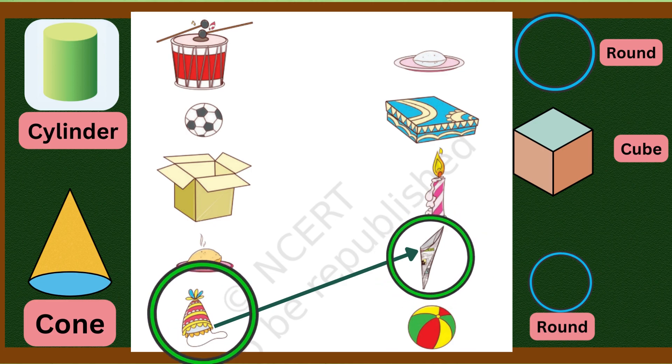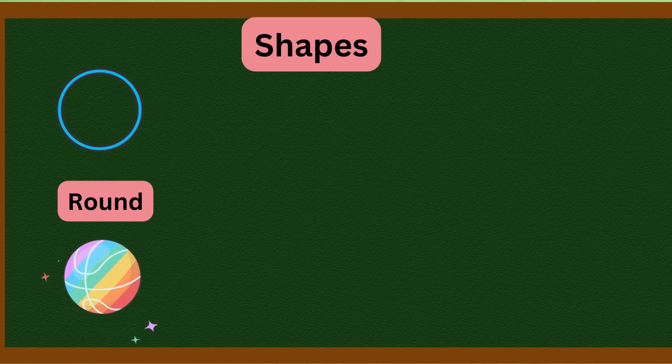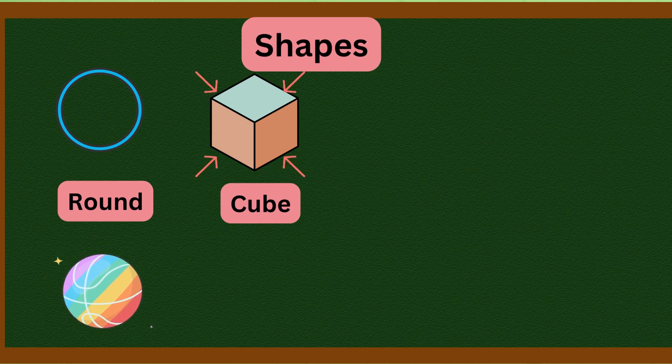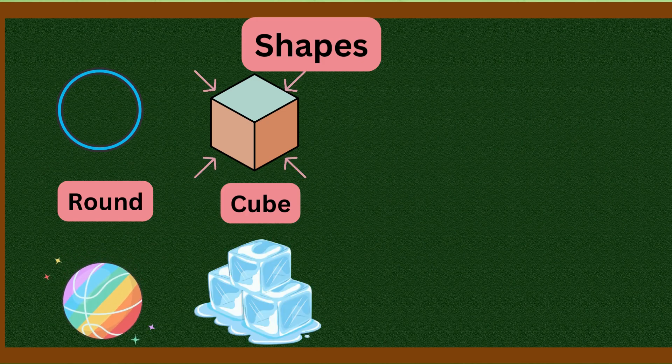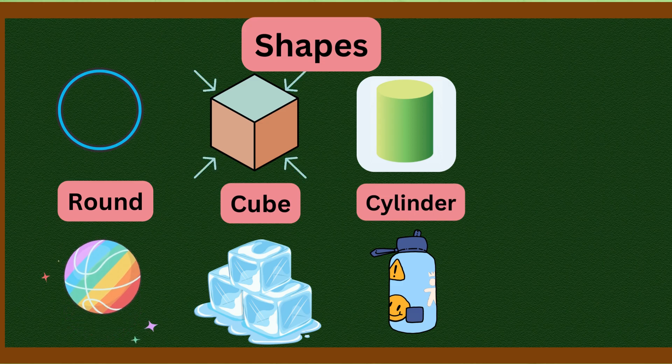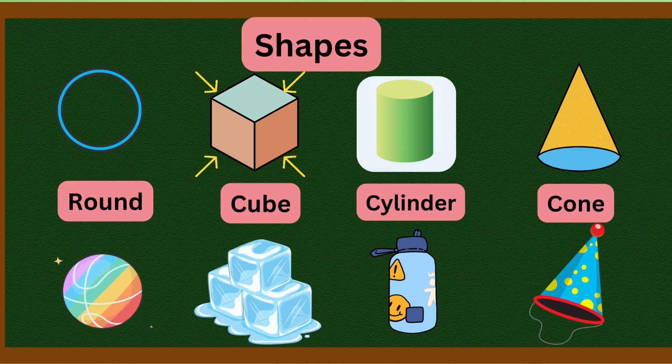From this exercise, what did we learn? We learned about many different shapes. First we learned about round shape. What is its example? Ball. Then we learned about cube. What is a cube? It has length, breadth, and height. You must have seen ice cubes in the fridge - ice cube is an example here. Second is cylinder shape. I have already told you, water bottle will be its example. Then we learned cone shape. What example did we learn of cone shape? Birthday cap.